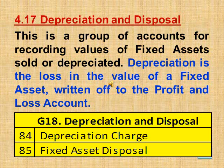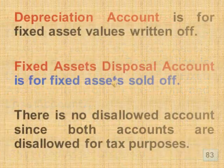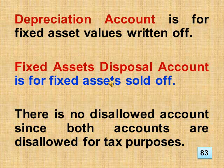Section 4.17 Depreciation and Disposal, Group 18. This is a group of accounts for recording values of fixed assets sold or depreciated. Depreciation is the loss in the value of a fixed asset written off to the profit and loss account. This includes the depreciation charge and fixed assets disposal accounts. Depreciation account covers fixed asset values written off. Fixed assets disposal account covers fixed assets sold off. There is no disallowed account since both accounts are disallowed for tax purposes.